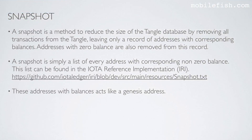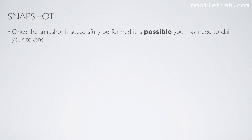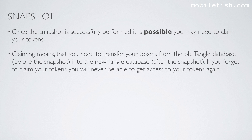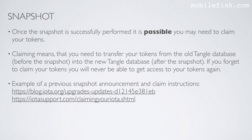These addresses with balances act like a genesis address. Once the snapshot is successfully performed, it is possible you may need to claim your tokens. Claiming means that you need to transfer your tokens from the old tangle database, before the snapshot, into the new tangle database after the snapshot. If you forget to claim your tokens, you will never be able to get access to your tokens again. Here is an example of a previous snapshot announcement and claim instructions.